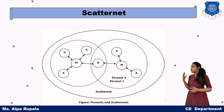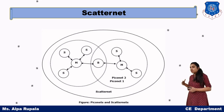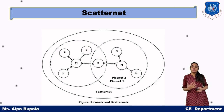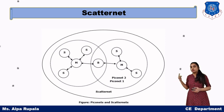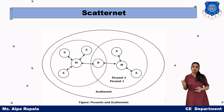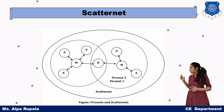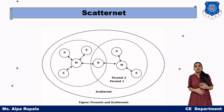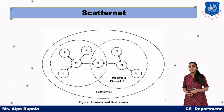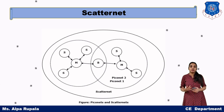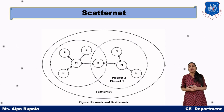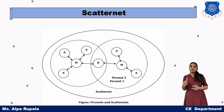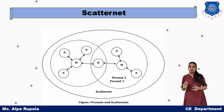The next topic is Scatternet. Here we can see that we have two different Piconets — Piconet 1 and Piconet 2. Piconet 1 has a total of 4 slaves. Piconet 2 also has a total of 4 slaves, in which one slave is common to both Piconets. Whenever we have this kind of condition, we say that this is a Scatternet network. The advantage of having a Scatternet network is that your Bluetooth range will be increased, with one device common to both Piconets.